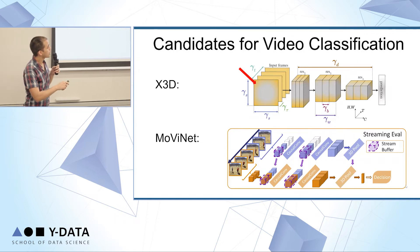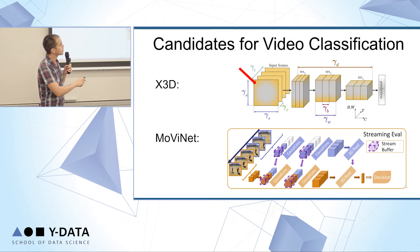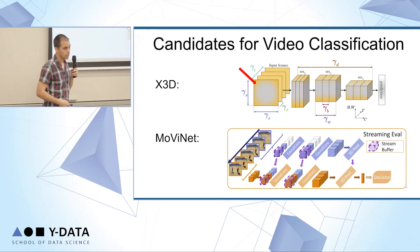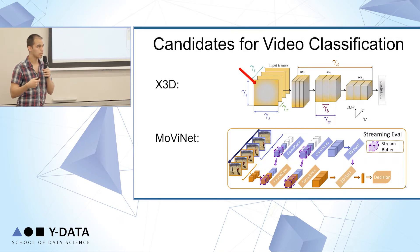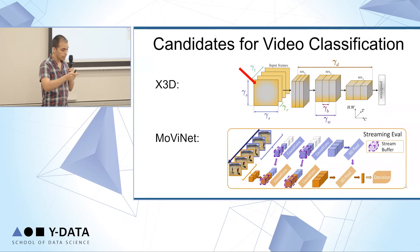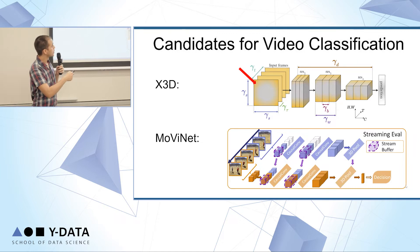What's interesting about this architecture is that they start with a very small architecture — small in terms of image resolution, depth, and many other axes. Every time they take a step, they see how the performance or accuracy improves, and they take the step that gives the most improvement with the least added computations. This results in a very small and fast network.